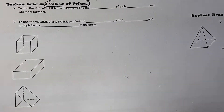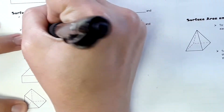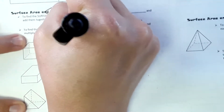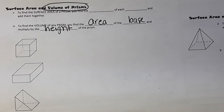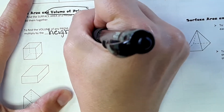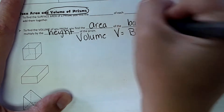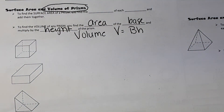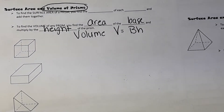To find the volume of a prism, you find the area of the base and multiply by the height. The equation is: Volume = area of the base × height. Essentially, we find the area of the base — which for a rectangular prism is a rectangle — then multiply by the height, and that tells us how many unit cubes fill the prism.